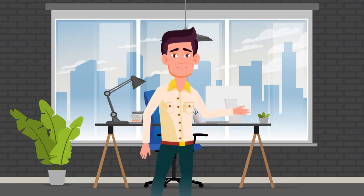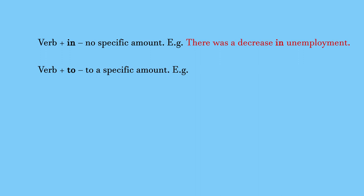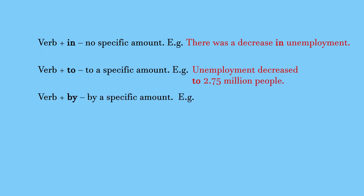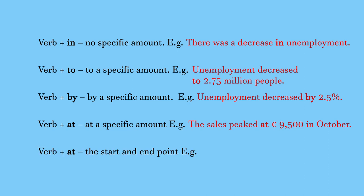Finally, let's look at some prepositions we use when we describe trends. There was a decrease in unemployment. Unemployment decreased to 2.75 million people. Unemployment decreased by 2.5%. The sales peaked at 9,500 euros in October. Inflation started at 2% and peaked at 2.75%.